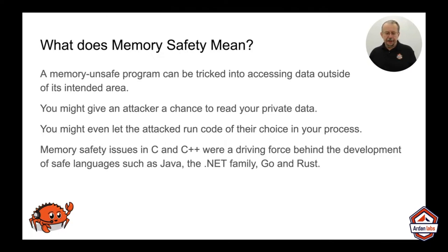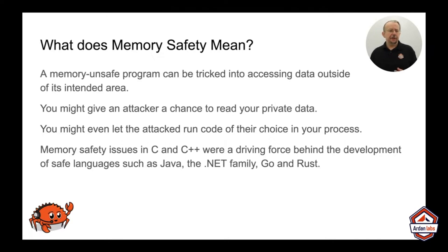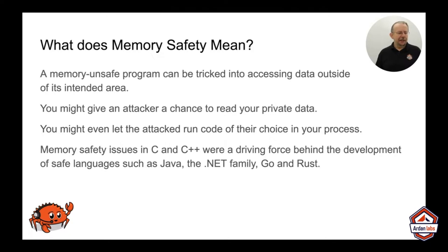Memory safety issues in C and C++ were very much the driving force behind the creation of Java, then the .NET family, Go, and Rust. Rust itself is very much a response from Mozilla to how well C++ was working out for them. I just saw the question: if it compiles, it works. Is that true? That is a beautiful tie-in to our next set of slides, where you'll see why that can be a problem with some languages.